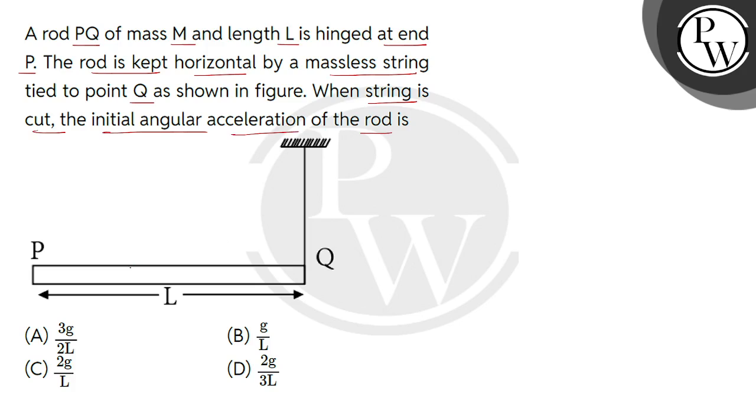We have seen in the diagram one rod which indicates PQ. Its mass is M and its length is shown L. Now, let's hinge this to an end and this is how we maintain it with the help of the string. How do we maintain it? Horizontal.